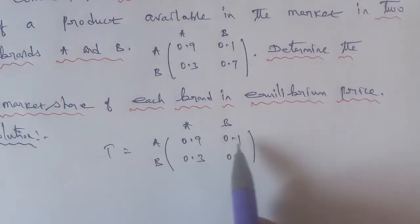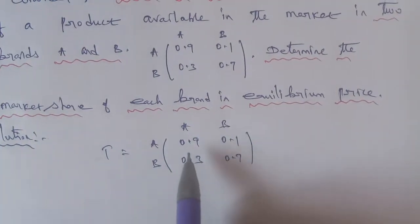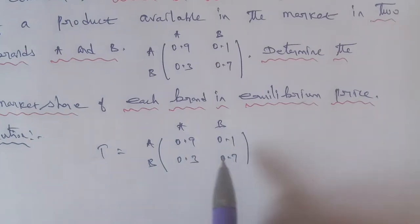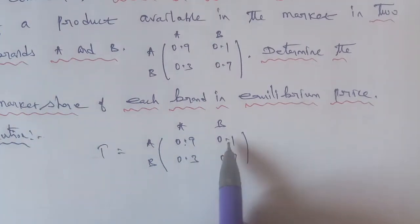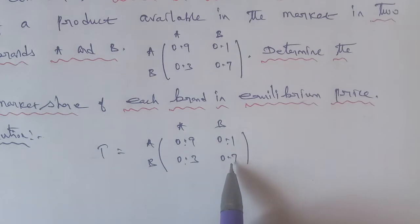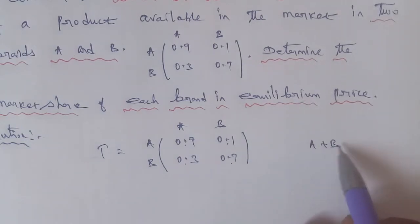In the transition matrix, row values add to 1: 0.9, 0.1, 0.3, 0.7. The condition is A plus B is equal to 1.